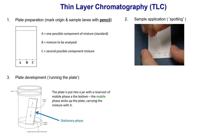Once all spots are dried, place the plate into a chamber that contains the mobile phase liquid. The mobile phase will push some of the compounds up the plate — we call this running the plate or developing the TLC plate. This TLC chamber will carry some compounds up the plate while others are left behind.